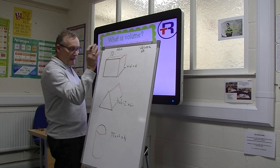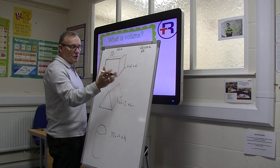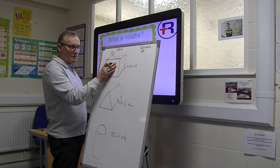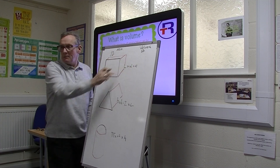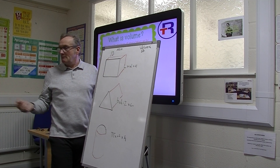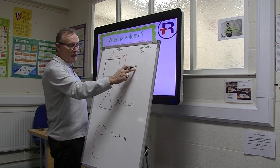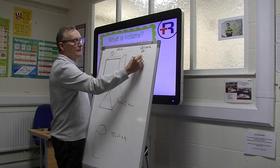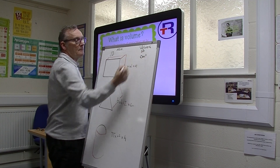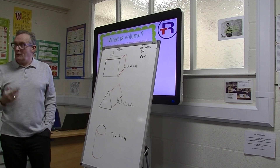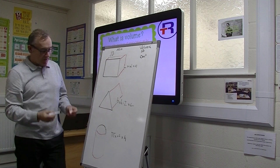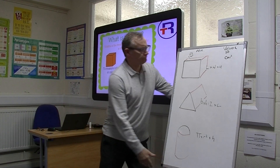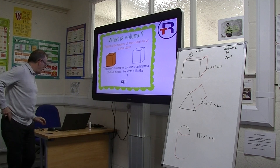All you've got to remember if you get a volume question is: look at the shape — what is the shape? Remember the formula for that shape for its area, and then just multiply by the last remaining measurement. In this case height, in that case length, in that case height. And then the answers become centimetres with a little number 3, because we're three-dimensional — we've done three calculations. That's all you've got to remember to work out the volume of something. Fairly straightforward.